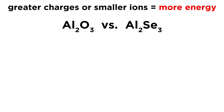For our first example, Al₂O₃ versus Al₂Se₃ — aluminum is the same in each, so let's compare what's different: O₃ and Se₃. They're in the same group, so they have the same common charge — that's not going to help. However, oxygen is smaller than selenium, so Al₂O₃ will have the smaller interionic distance because it has smaller ions. Therefore, Al₂O₃ has a greater lattice energy.